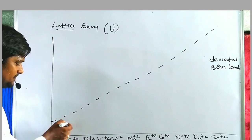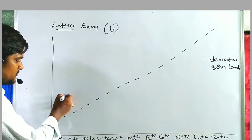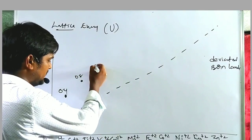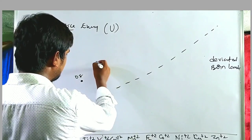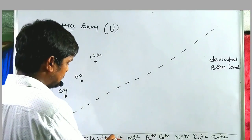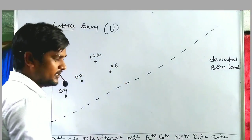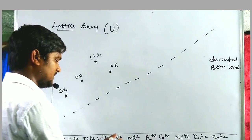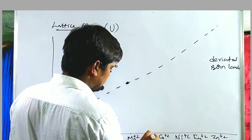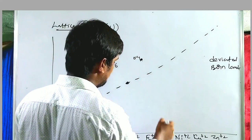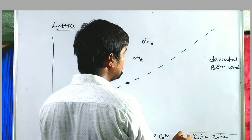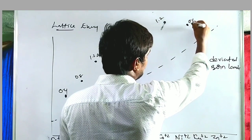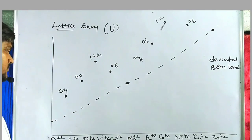According to CFSE values, in weak field (high spin) complexes: Sc²⁺ (d¹) = 0.4Δ_o, Ti²⁺ (d²) = 0.8Δ_o, V²⁺ (d³) = 1.2Δ_o, Cr²⁺ (d⁴) = 0.6Δ_o, Mn²⁺ (d⁵) = 0, Fe²⁺ (d⁶) = 0.4Δ_o, Co²⁺ (d⁷) = 0.8Δ_o, Ni²⁺ (d⁸) = 1.2Δ_o, Cu²⁺ (d⁹) = 0.6Δ_o, and Zn²⁺ (d¹⁰) = 0. When we connect these points on a graph, we get a double-humped curve, similar to hydration energy.